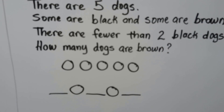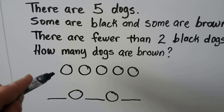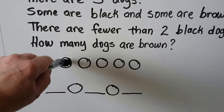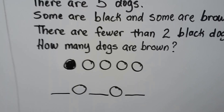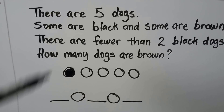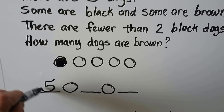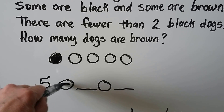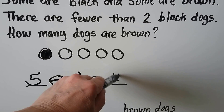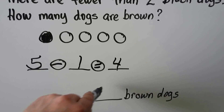We can write our subtraction sentence. There's one black one — that's fewer than two. How many dogs are brown? We start with the number in all — five — take away the black one, and it is equal to four. How many dogs are brown? Four.